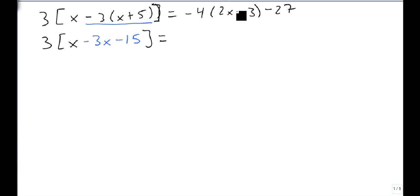So we're going to leave this 3 on the outside, and the x stays alone. But on the inside, I'm going to get minus 3x minus 15. And on the right side, I'm just going to distribute the minus 4 through. So we get minus 8x plus 12 minus the 27 that's already there.